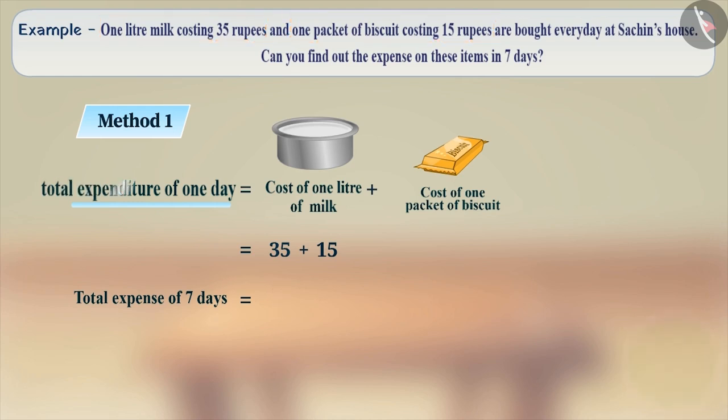We have to multiply the total expenditure of one day, that is, 35 plus 15 by 7. Seven into 35 plus 15. After simplification, we get 7 into 50 which is equal to Rs. 350.